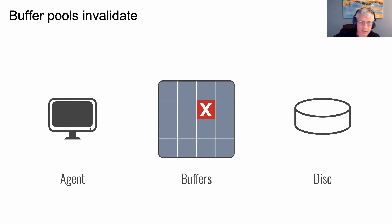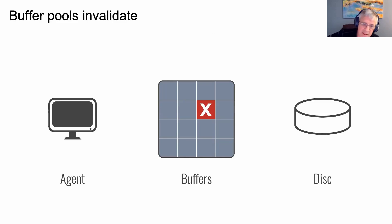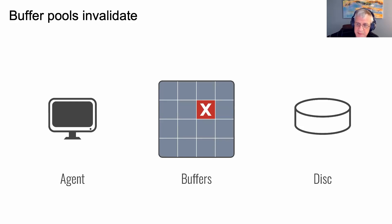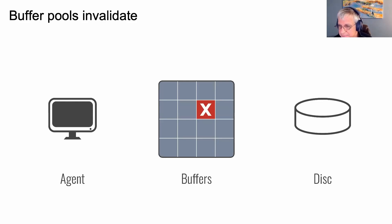One of the big challenges with buffer pools is the need to invalidate the data within the buffer pool. At some point the data retrieved from disk and put into the buffer has to be invalidated — for example, if the data on disk has changed, reading it from the buffer would give you an old copy. Mechanisms have to be put in place to flag that part of the buffer as invalid. The other reason to invalidate is if data hasn't been accessed for a period of time — to free up memory so more data can be retrieved from disk.